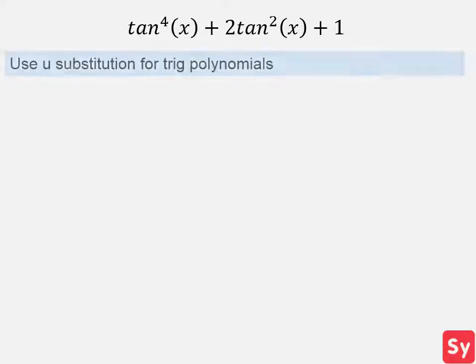Last example, we have tan⁴(x) plus 2tan²(x) plus 1. Since this is a trig polynomial, we can try to use u substitution. We let u equal tan²(x) and we plug this in and we get u² plus 2u plus 1.